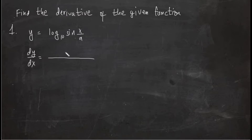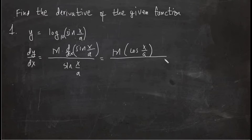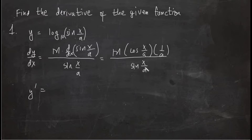We use the formula for log base 10: m times the derivative of u over u, where u = sin(x/a). The derivative of sin(x/a) is cos(x/a) times 1/a. So we get m times cos(x/a) over sin(x/a), all over a. Since cos over sin is cotangent, the final answer is m/a times cot(x/a).